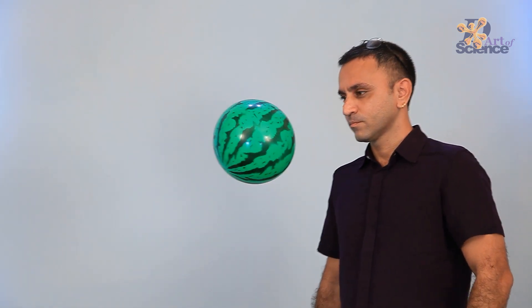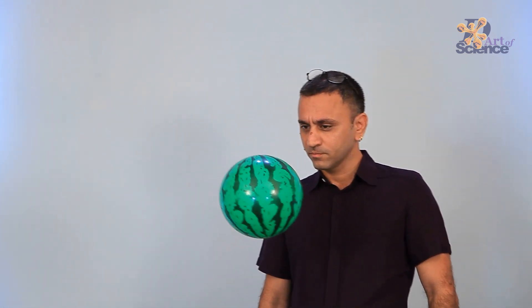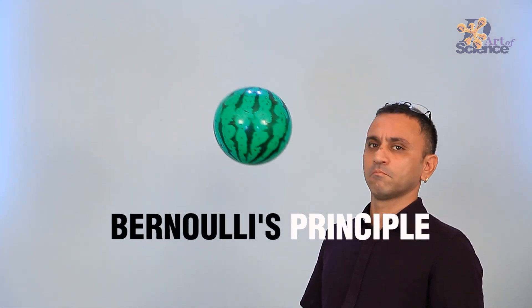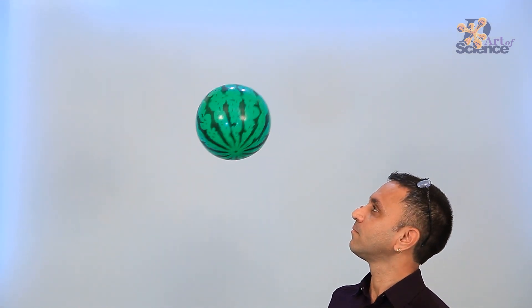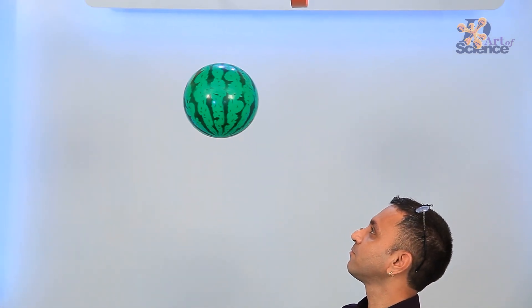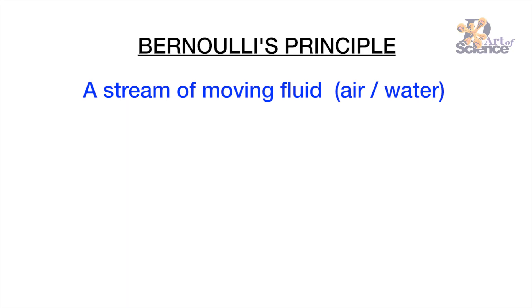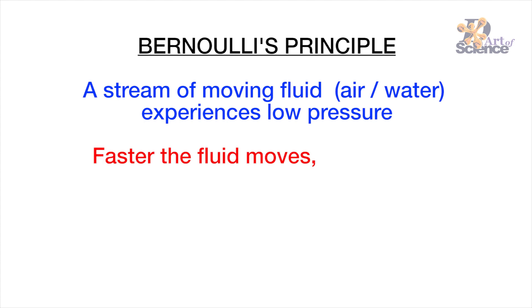What helps us to actually levitate this ball is a very essential principle of physics known as Bernoulli's principle. In 1738, a scientist named Daniel Bernoulli observed that a stream of moving fluid, that is air or water, experiences low pressure. In fact, the faster the stream of fluid moves, the lower the pressure drops.